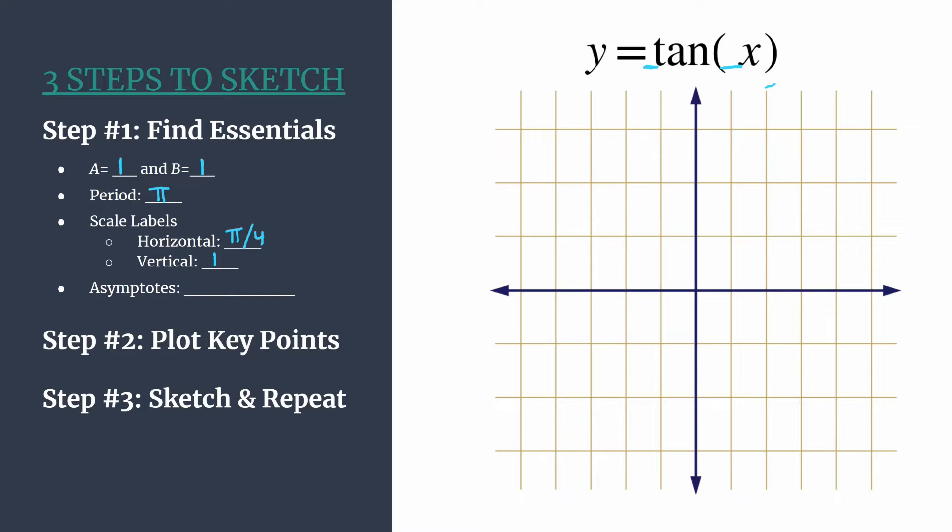Finally, the asymptotes equation. And remember, we have a formula for this. Let's write it out quickly. x equals π over 2b plus π over b times k, where k is an integer that generates each particular asymptote. So substituting in b, we get x equals π over two, plus π over one, or just πk. k belongs to the set of all integers.